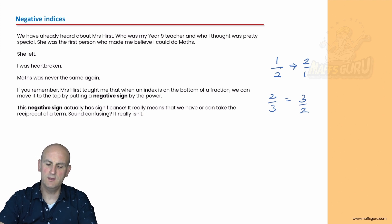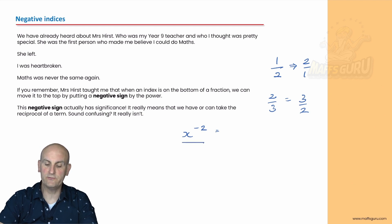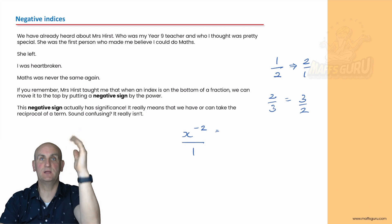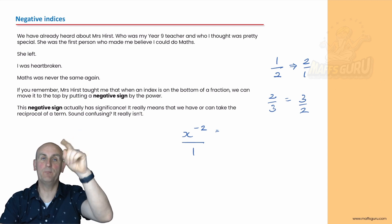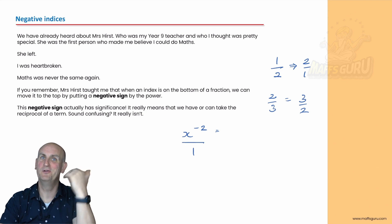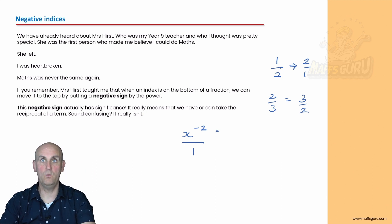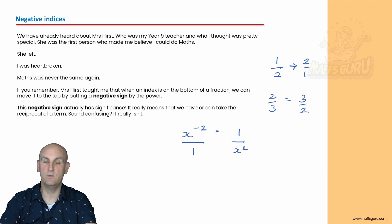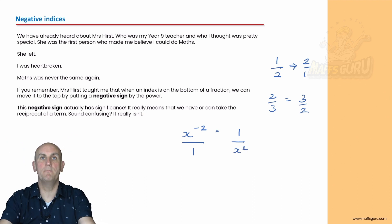And she was like, well if you have x to the power of minus two, at the moment that's on the top of a fraction, because anything can be written as a fraction if we divide it by one. And she went: take the minus sign and reciprocate — if it's on the top, move it to the bottom and ditch the negative sign; if it's on the bottom, move it to the top and ditch the negative sign. So basically x to the minus two is exactly the same as one on x squared. My mind was blown.